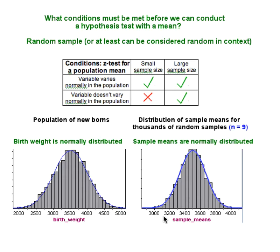When we collect thousands of random samples from this population and graph the sample means, we see a normal distribution, even for very small samples like 9 babies at a time. So we can use a normal probability model to determine how likely or unlikely given sample results are. This is an illustration of the first row in the conditions table.